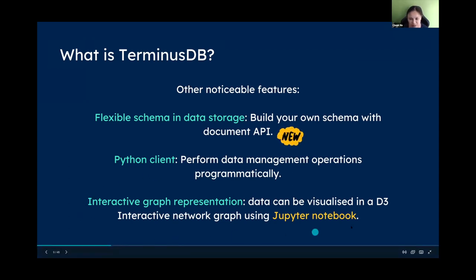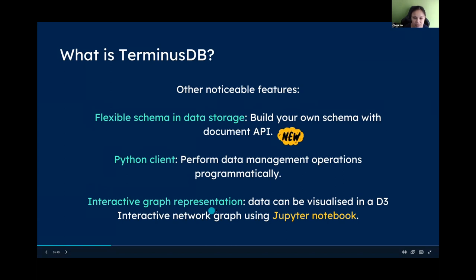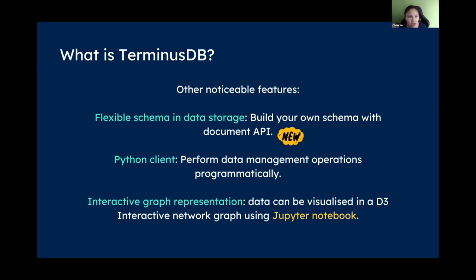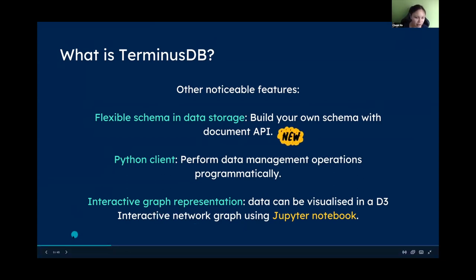There's also an interactive graph visualization — it was something everybody loved in the past, where you could zoom in, zoom out, move nodes around, color-code them, and it rendered in JavaScript and worked in Jupyter Notebook. You could export it as an HTML file. Sadly this is temporarily unavailable because we're updating for the new version, but we'll make it available again. If you want to see a demonstration, check some of our older blog posts.